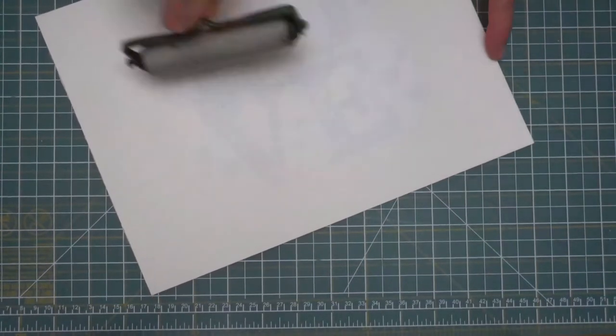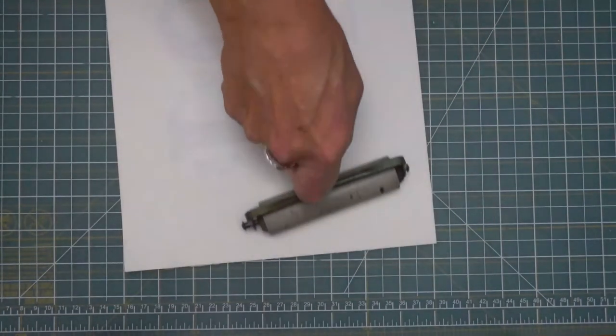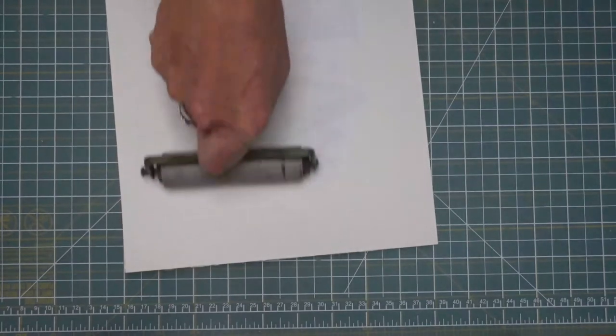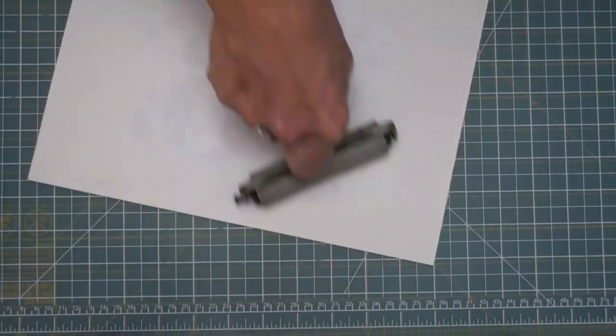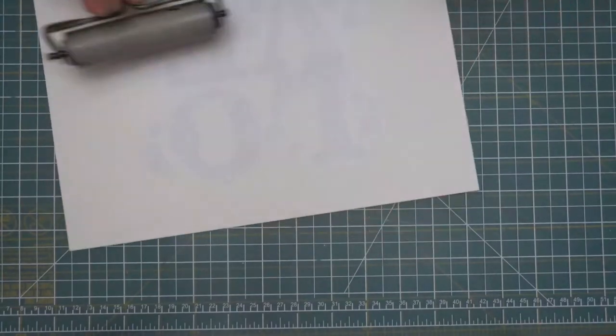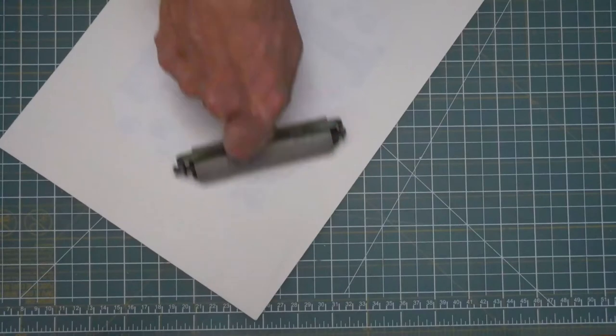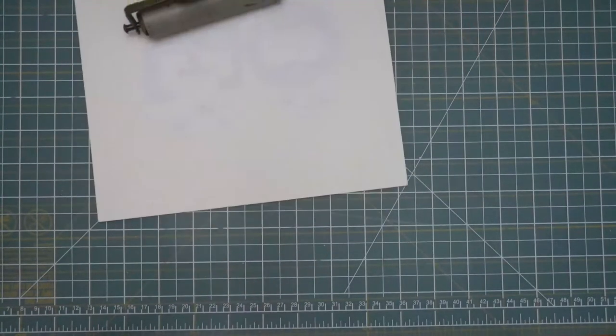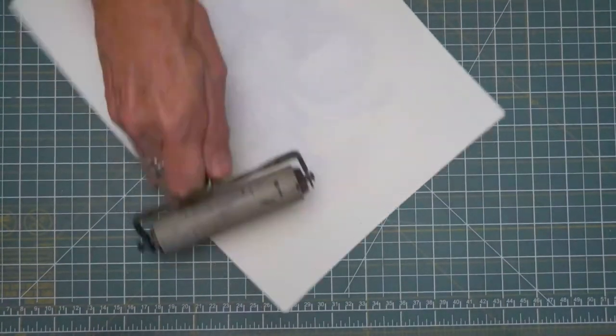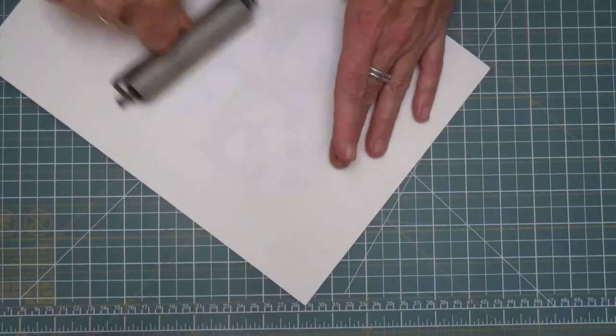And if you had a material like canvas, you might want to put some of that medium on both the canvas and on the print before you adhere the two parts with each other. I'm just going to keep going around and around and around, making sure that I have really good coverage.